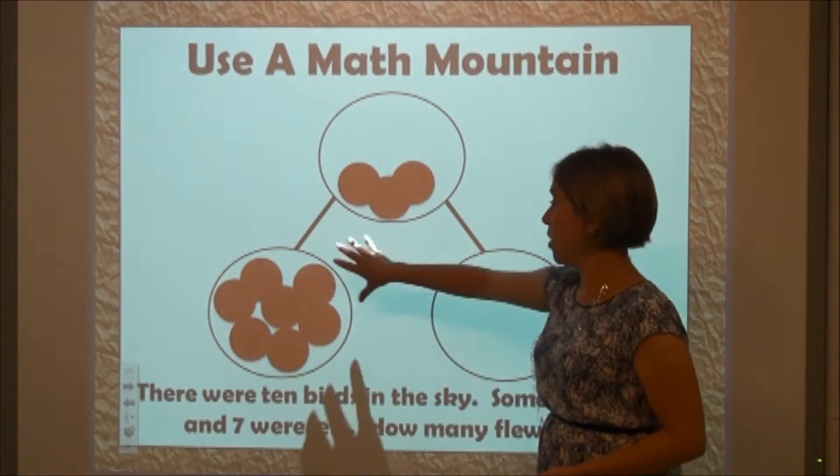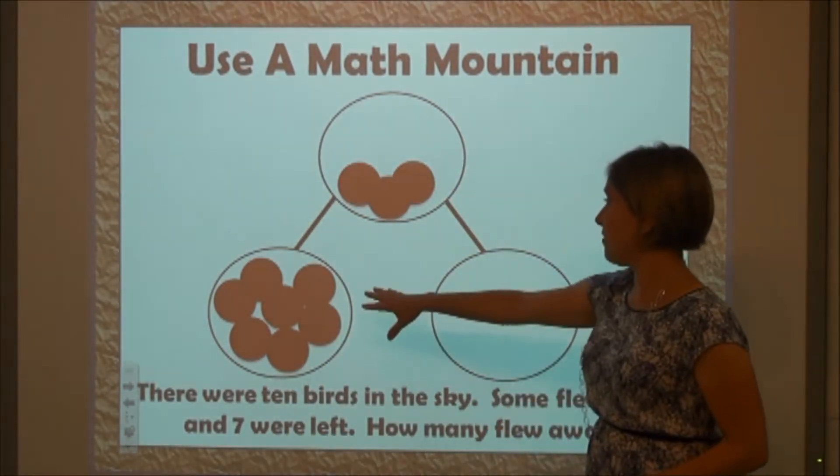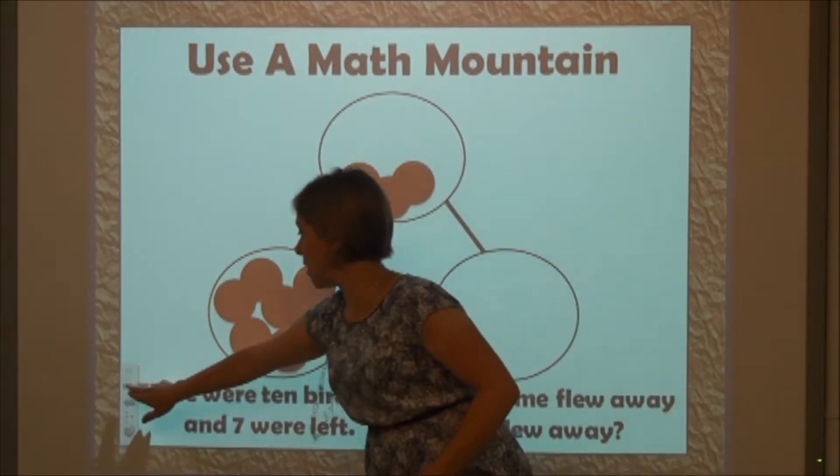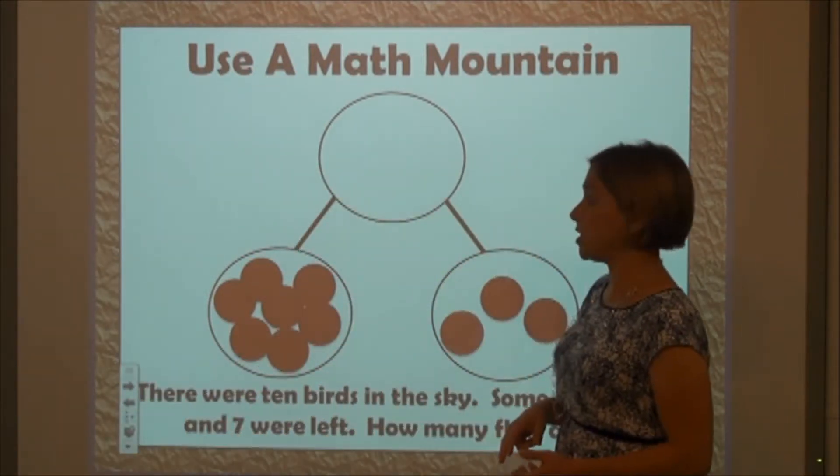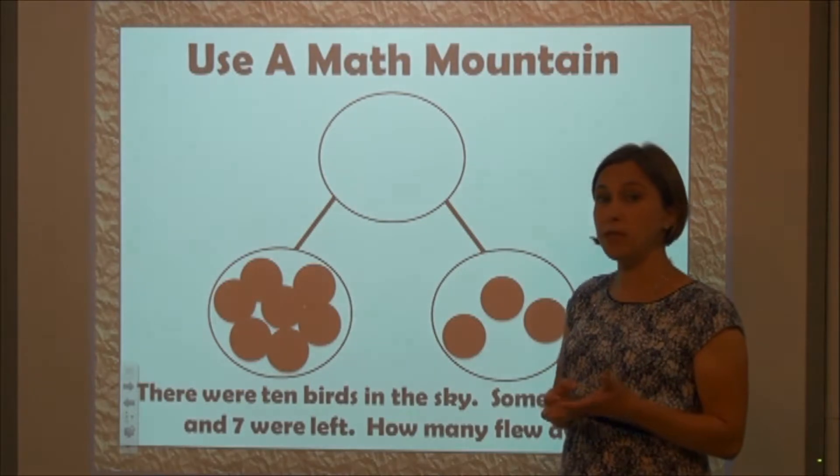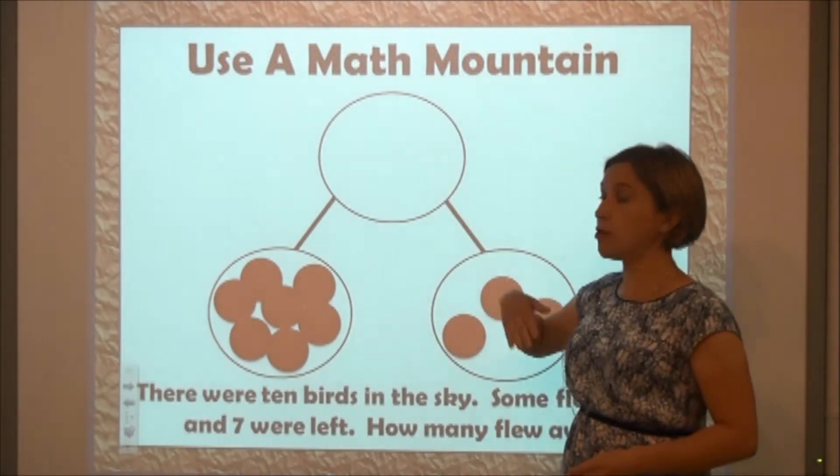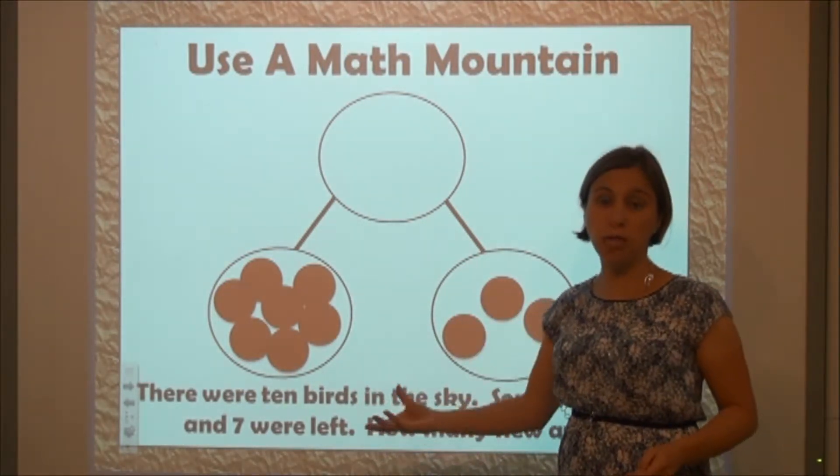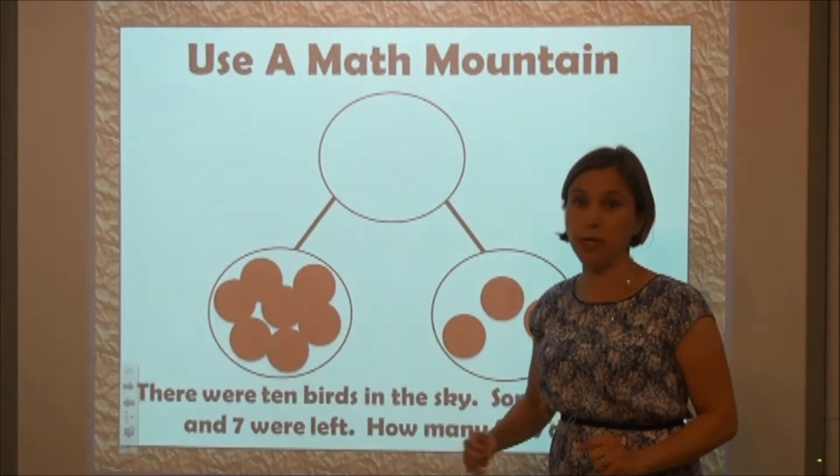We knew the whole was ten, we're breaking apart the part, we have seven and then we know the other part is three, and that's our missing part. Using very concrete manipulatives and tools, students are ready to move on to pictures and then more abstract equations.